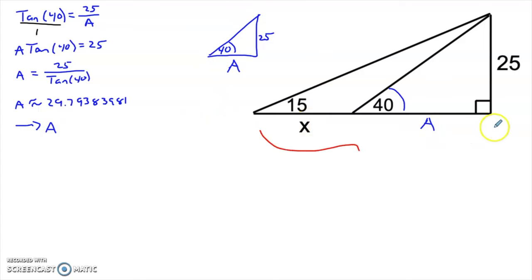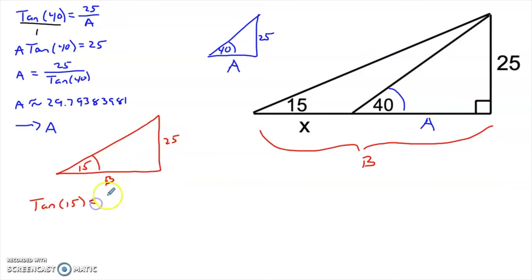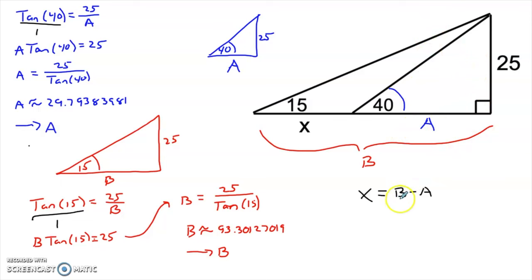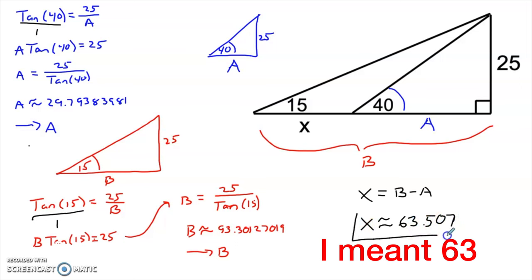In order to get to x, we need to figure out what this side is. Calling that side 'b', we use this larger triangle and again use tangent. That gives us tangent of 15 equals 25 over b, so b times tangent of 15 equals 25, and b equals 25 divided by tangent of 15. b is approximately 93.3013. I store that value in my calculator as b. Then, as before, x is b minus a, so we get x approximately equal to 65.507.